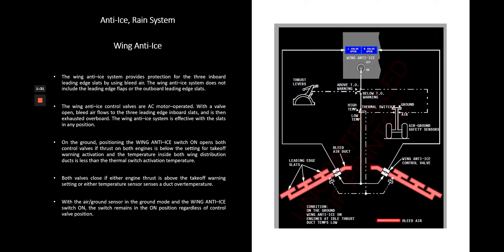Now let's talk about the wind anti-ice system on the Boeing 737. The diagram from FCOM Volume 2 shows the three inboard leading edge slats and the wind anti-ice control valve for both sides. The wind anti-ice system provides protection for the three inboard leading edge slats using bleed air. The system does not include the leading edge flaps or the outboard leading edge slats. The wind anti-ice control valves are AC motor operated. With a valve open, bleed air flows to the three inboard leading edge slats and is then exhausted overboard. The wind anti-ice system is effective with the slats in any position.